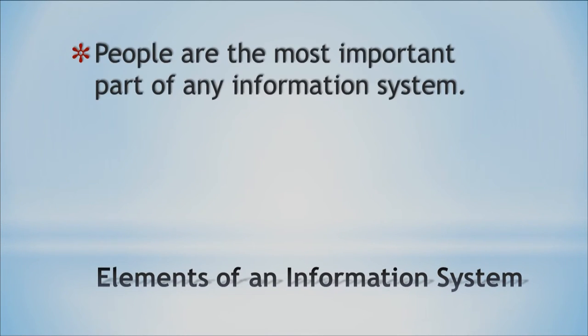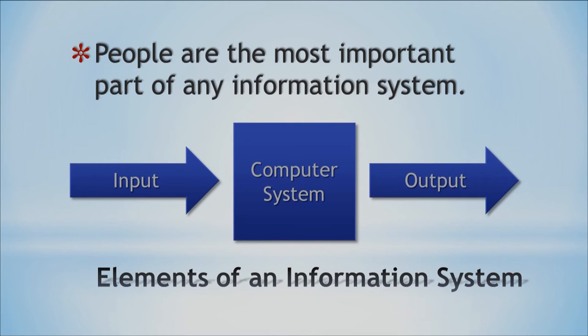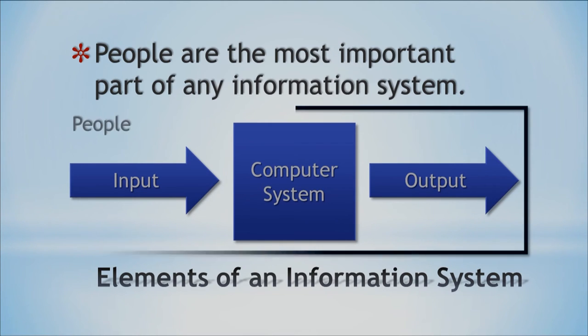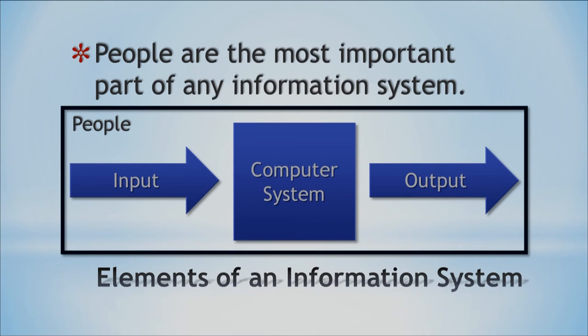There is one other thing I want you to consider: even though we have technology all around us, technology does not dictate what we do. People are still the most important component in any information technology system. In an information system, we have input, the computer system, and output — what you put in and what you get out. However, all of this is managed and created by people. I want you to keep that in mind throughout the course and as we move on with other technologies.